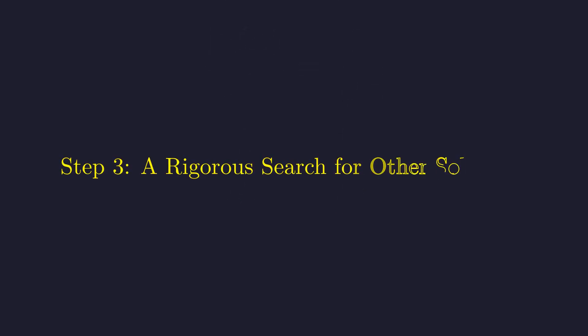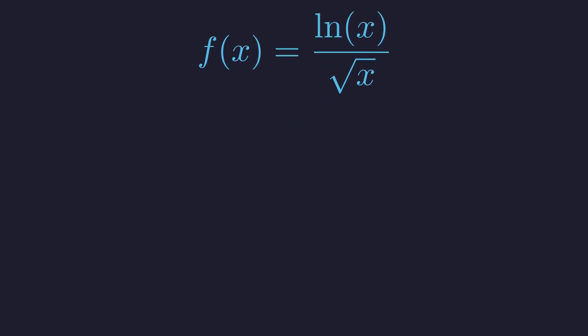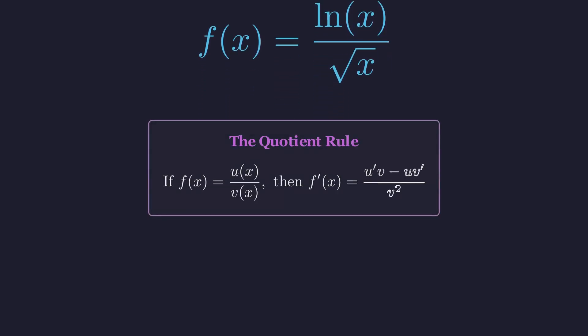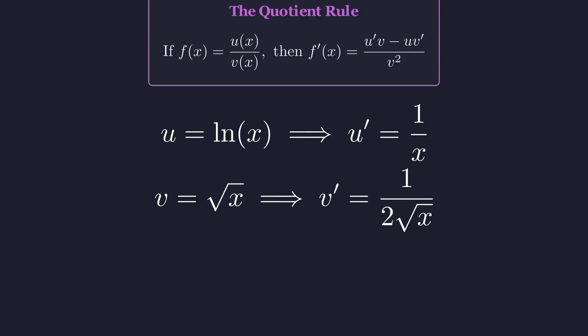We've found one solution, but is it the only one? To answer this definitively, we must analyze the function's behavior using calculus. Let's define the function f(x) from the left side of our equation. To find the function's maximum, we need its derivative, which requires the quotient rule. We identify our u and v and find their respective derivatives.